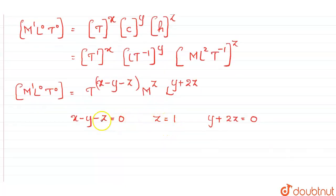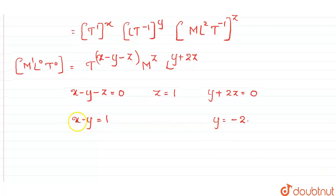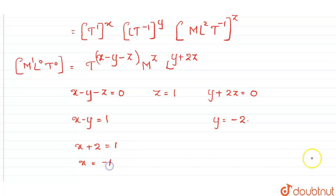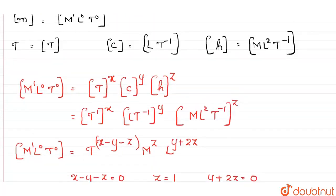Substituting z = 1 into the equation, we get x minus y = 1. From y + 2z = 0, we get y = -2. Substituting y = -2 gives x + 2 = 1, so x = -1. Therefore x = -1, y = -2, and z = 1.